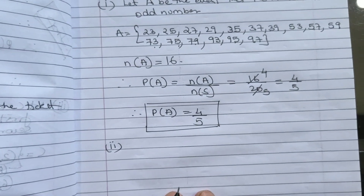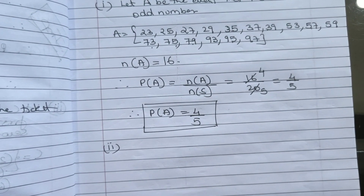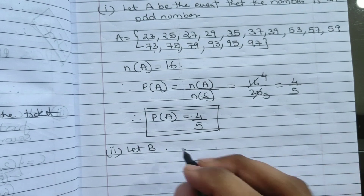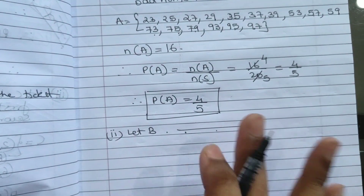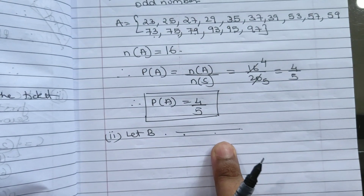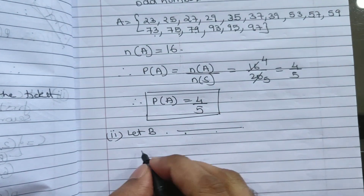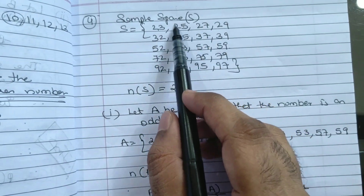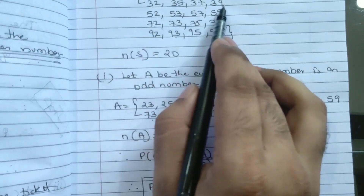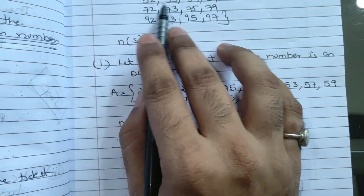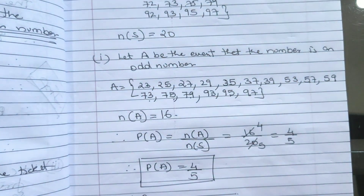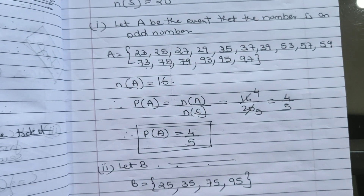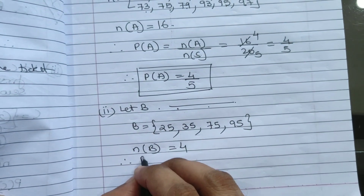Next: it should be a multiple of 5. Let B be the event that the number is a multiple of 5. Multiple of 5 means in the 5 times table. From our list, numbers ending in 5 or 0: 25, 35, 75, 95. So we take 25, 35, 75, and 95.